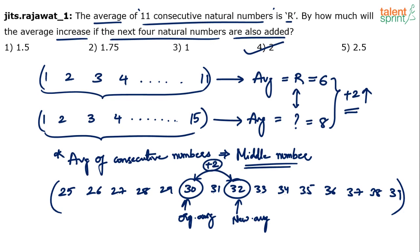Similarly, if you include the next 6 natural numbers, the average will increase by 3. For instance, adding 40 and 41 to the 15 numbers gives an average of 33. The increment in average depends on how many next natural numbers you include. Don't rely on a shortcut formula — just remember the concept: the average is always the middle number. When you include the next four numbers, the middle jumps by 2, so the answer is the average increases by 2.